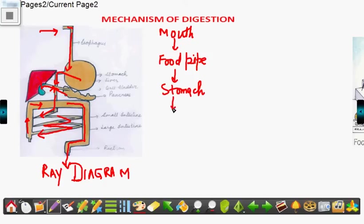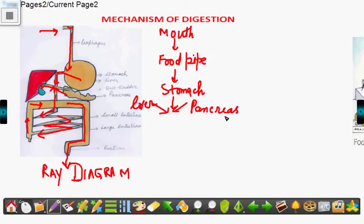After the stomach, the digestive juices pour in — from the liver and pancreas — and then the food goes to the small intestine.